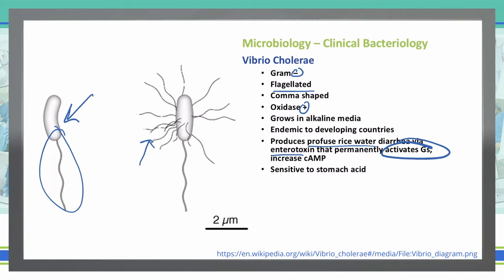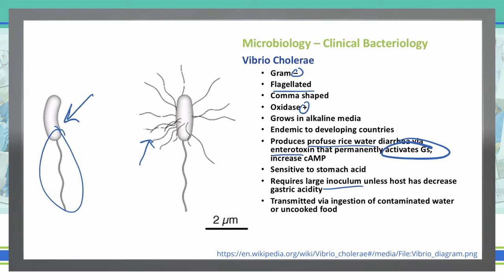It does require a large inoculum unless the host has a decrease in gastric acidity. So its ID50 is very high for it to be able to cause infections. Transmission is via contaminated water — cholera present upstream in the water can infect someone who drinks it — or through uncooked food.